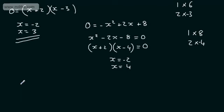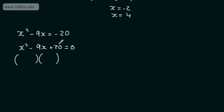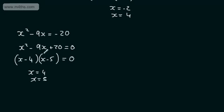For x² - 9x = -20, rearrange to x² - 9x + 20 = 0. We need two numbers multiplying to +20 and adding to -9: that's -4 and -5. So (x - 4)(x - 5) = 0, giving x = 4 or x = 5. When the c term is positive, both factors have the same sign; when c is negative, the factors have opposite signs.